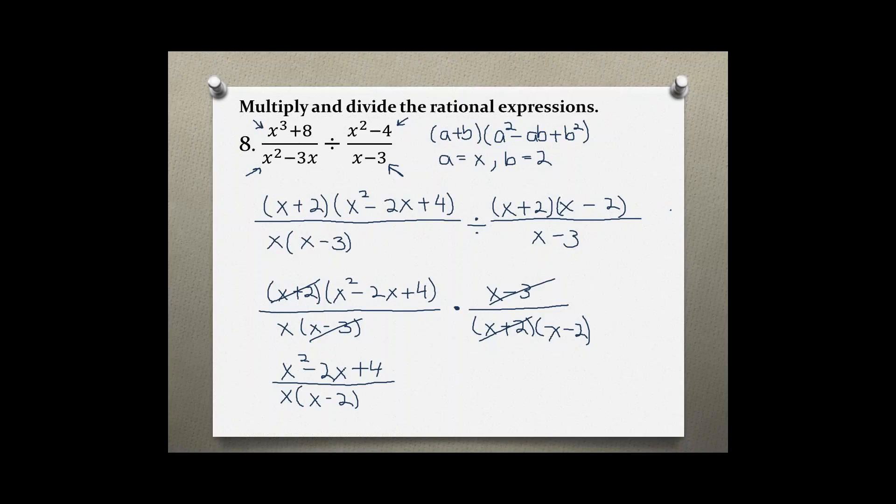You might assume that this is factorable, because this is a trinomial with a coefficient of 1, but remember the factors of this last number, the factors of 4, in this case, because the signs are different, so you would get the 2 factors of 4 to give you 2, but there are no factors of 4 that would add to give you 2. Therefore, this would be your answer, unless you decide to distribute this x into the bottom one, to just get rid of the parentheses, and then you would get x squared minus 2x plus 4, and x squared minus 2x. So now this is your final answer for this problem.